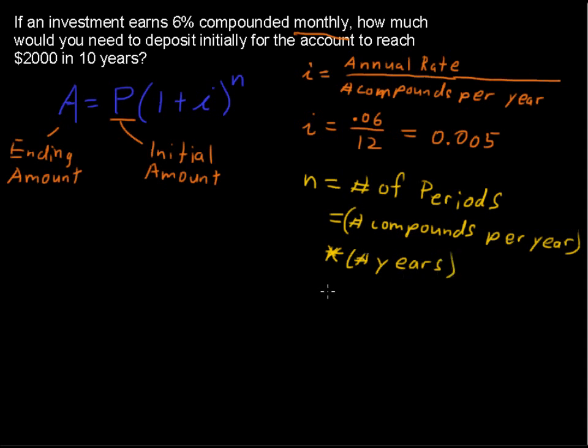Okay, that's n. So in our example, n equals, it's compounded 12 times per year times the 10 years, so 120. And I know you probably already jumped to that, but just to make sure we're all on the same page.